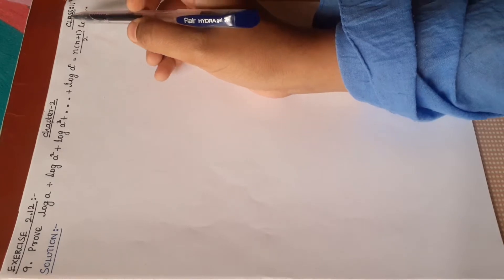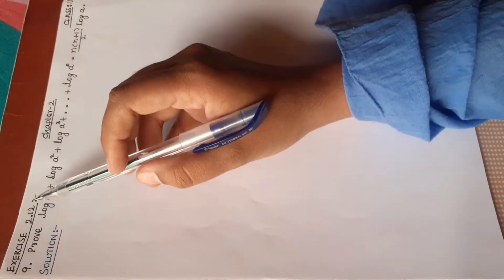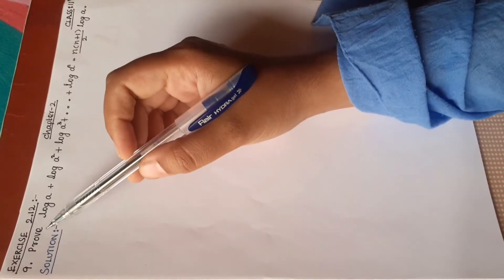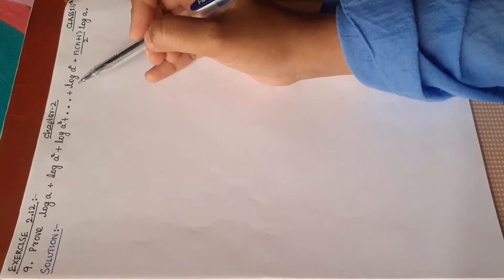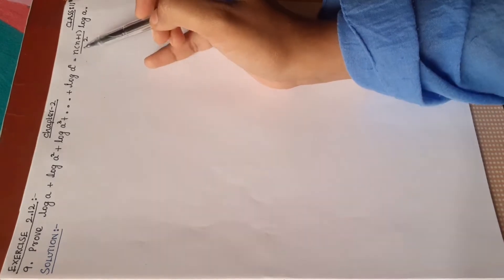Welcome to Rifasmax. 11th Standard, Chapter 2, Exercise 2.12, Question 9. Prove: log a + log a² + log a³ + ... + log aⁿ is equal to